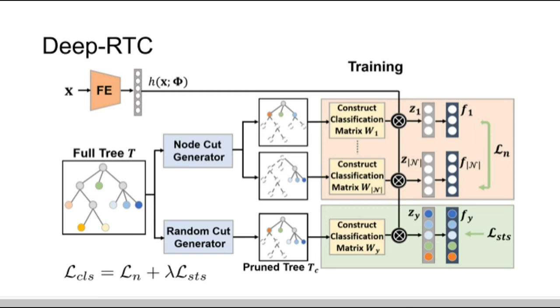This is the overall architecture of DeepRTC, which is trained with the node conditional consistency loss and the stochastic tree sampling loss for the generated random cut.